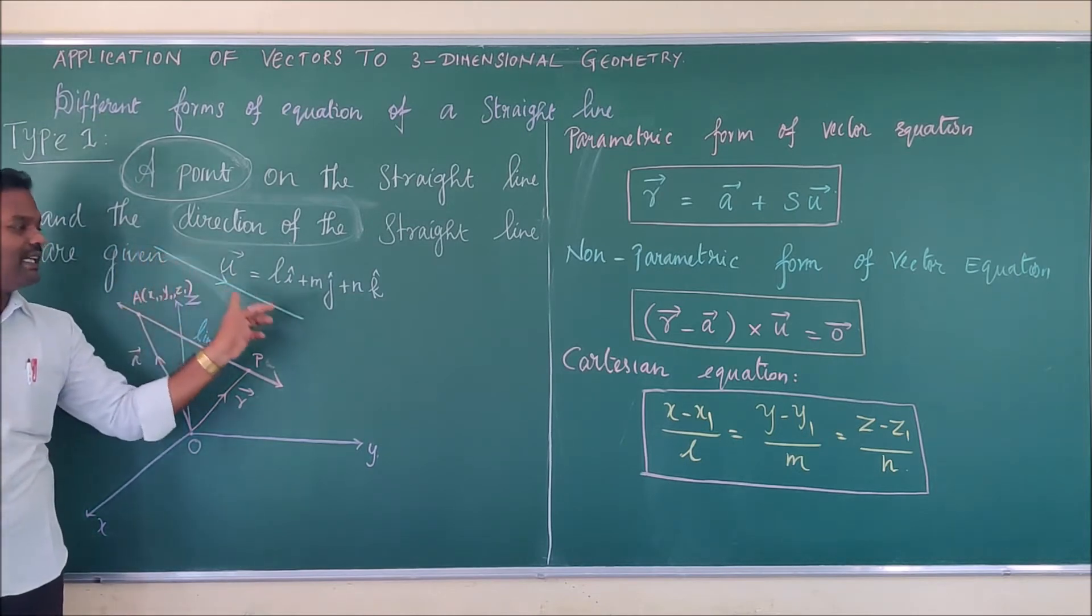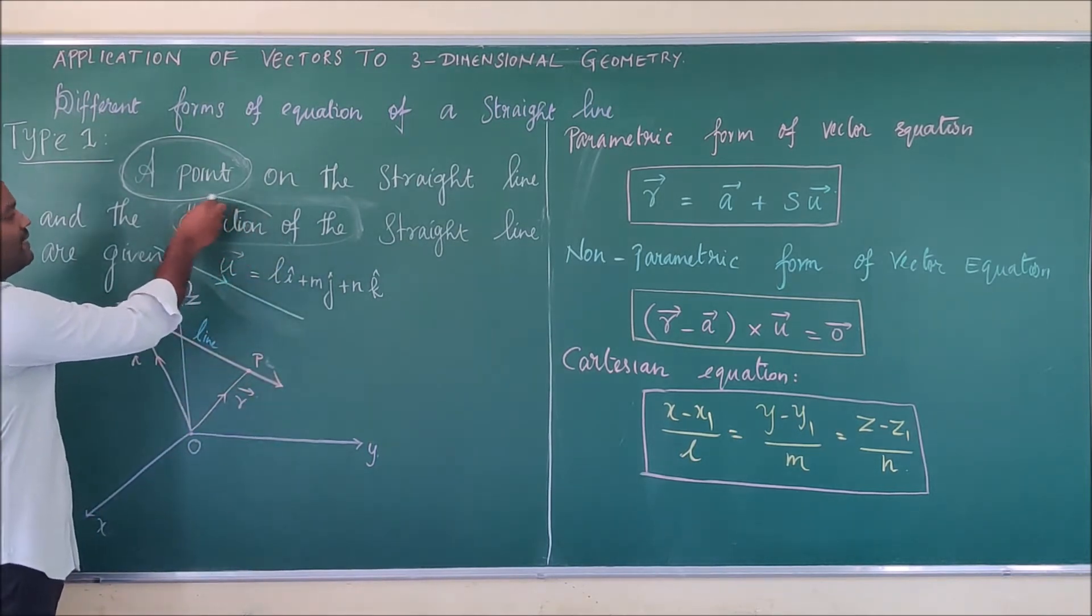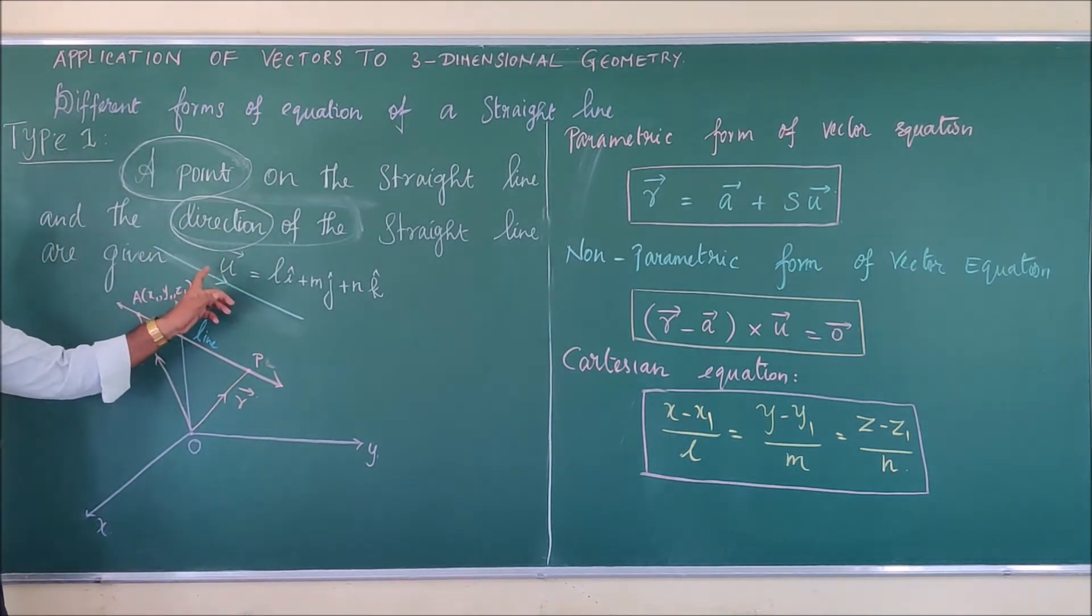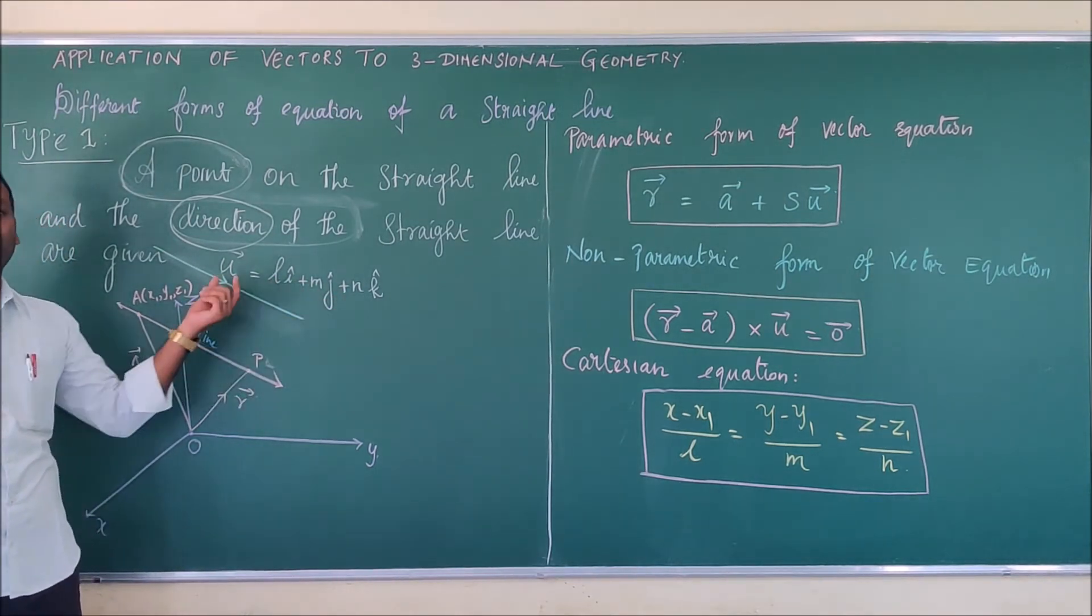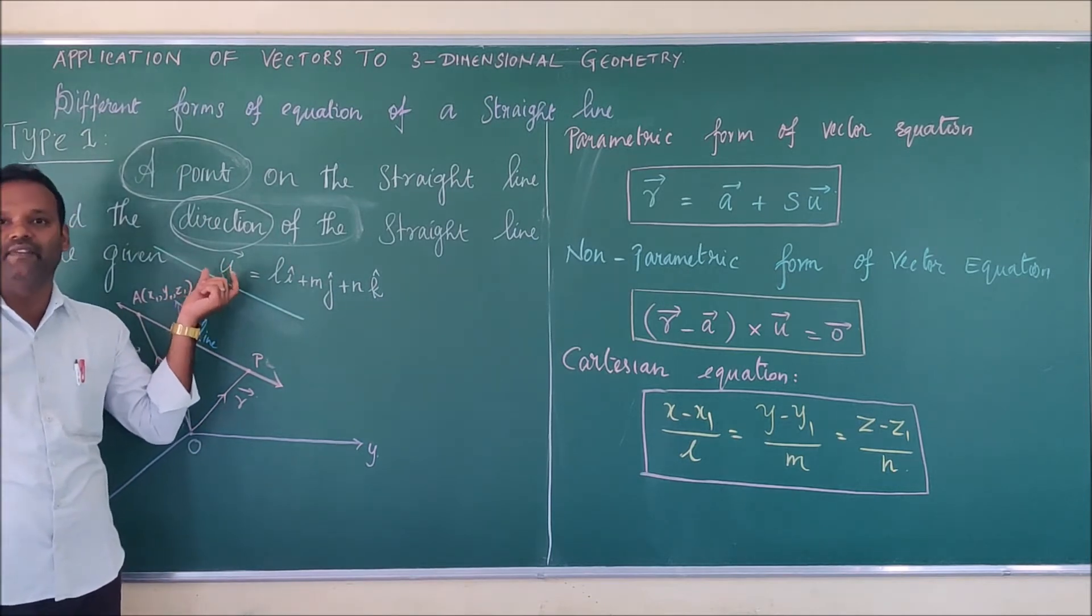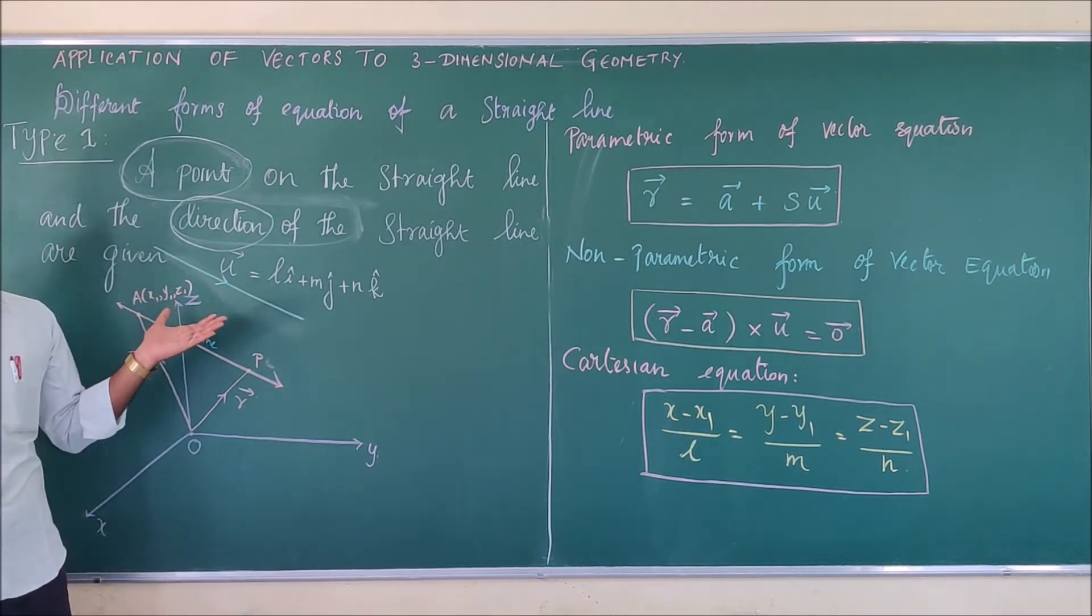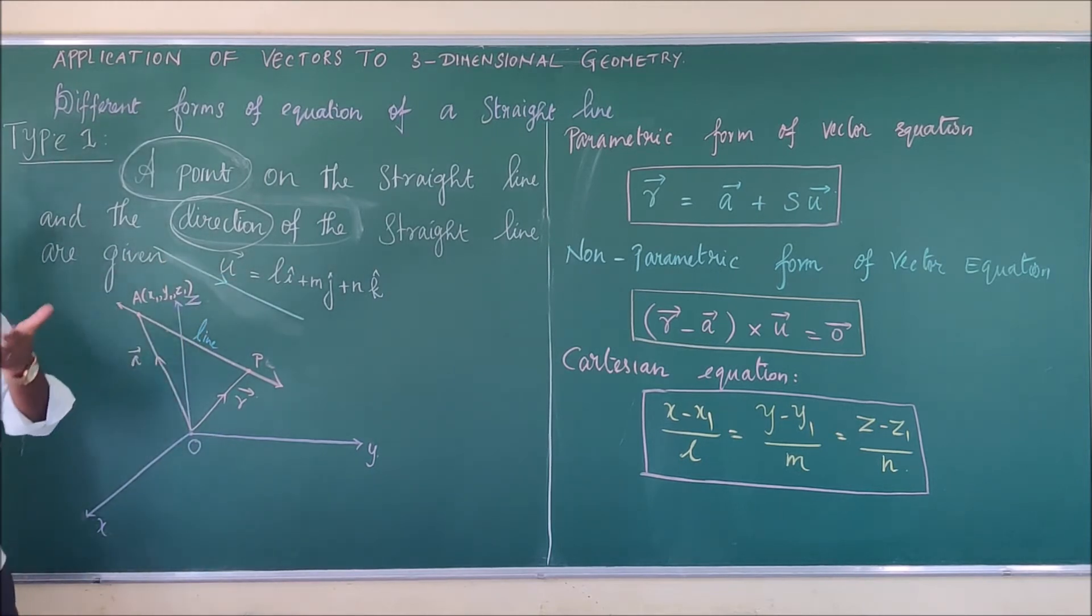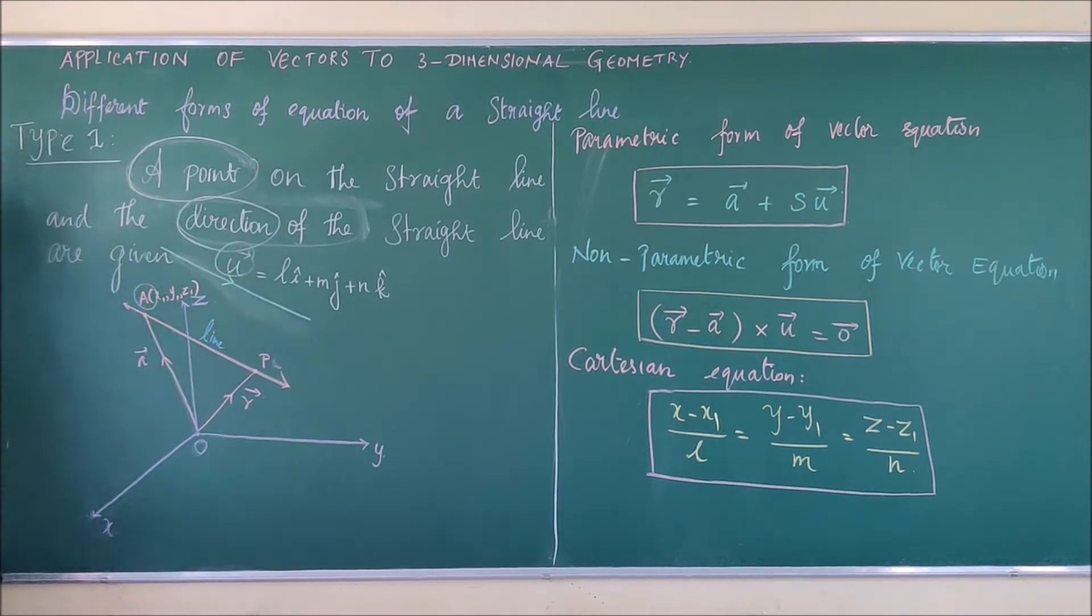Next, this is the directional vector in which the line also lies on the same direction. This is the second information. That is direction of the straight line. That is u vector. Generally, you have to take u vector as L i cap plus m j cap plus n k cap. In the book, instead of u vector, they are given b vector. No problem in it. Whatever can be the convenient thing, you can make yourself. I have written the directional vector as u vector. In the book, it is given as b vector. So, the information a and u vector is given to you.